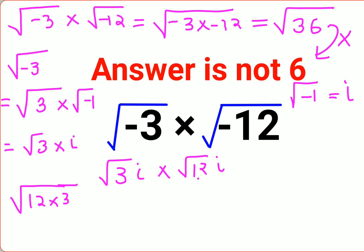And i times i gets you i². So now √(12 × 3) gets you √36i².